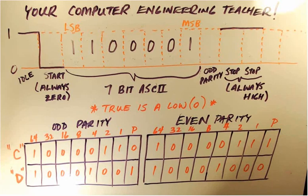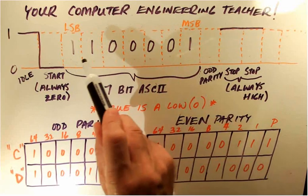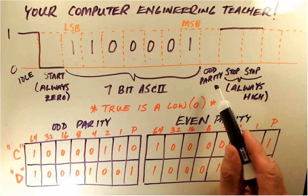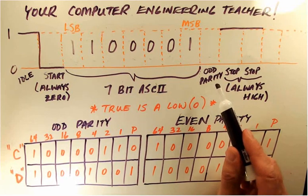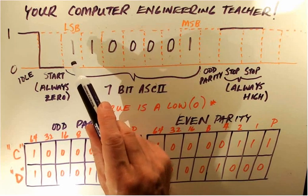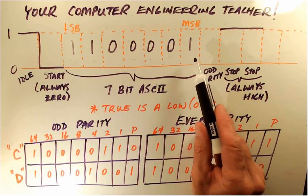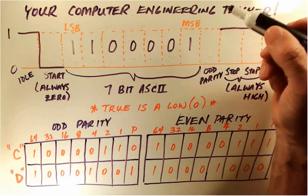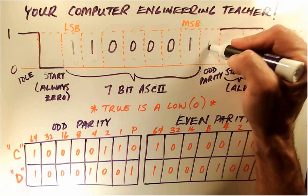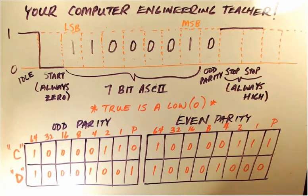So let's go and take a look at our previous example. We're trying to send the letter capital C and that's represented by this binary number right here. And let's say we use odd parity. Well if we're using odd parity like we said that's an odd number of ones. And since it's odd parity it's true. If it's true it's a zero. So we're going to put a zero for the parity bit.